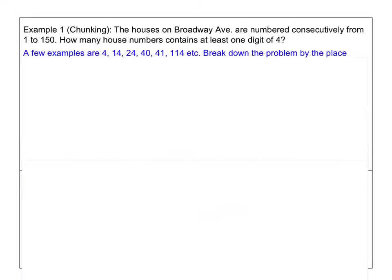So a few examples are house number 4, 14, 24, 40, 41, 114. All these house numbers have a digit of 4. So how do we count how many such numbers are out there? Well, you can list it up from 1 to 150 and then just count it one by one, but that's going to take a lot of time. And if for some reason you got a hiccup at some point, you have to restart counting again. So this is not a good way to do it.